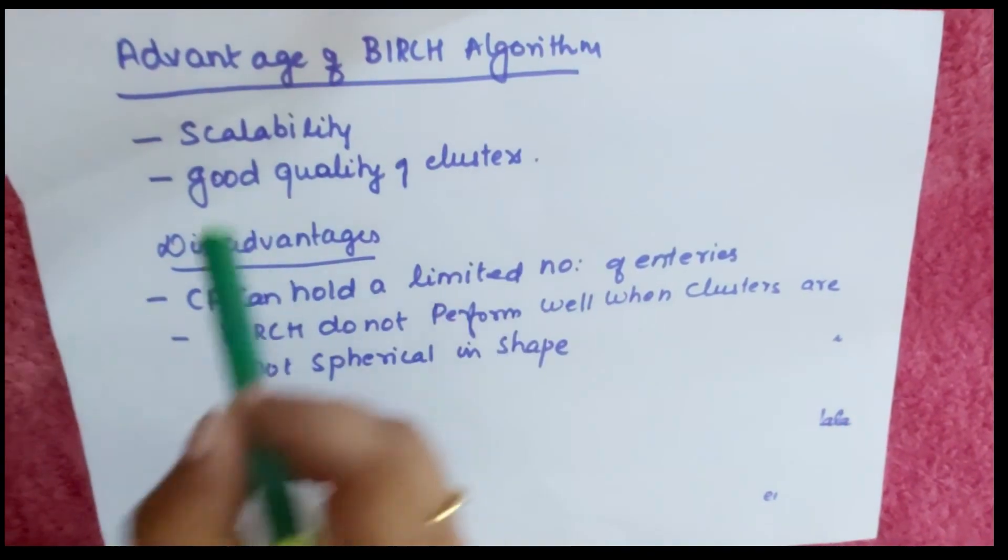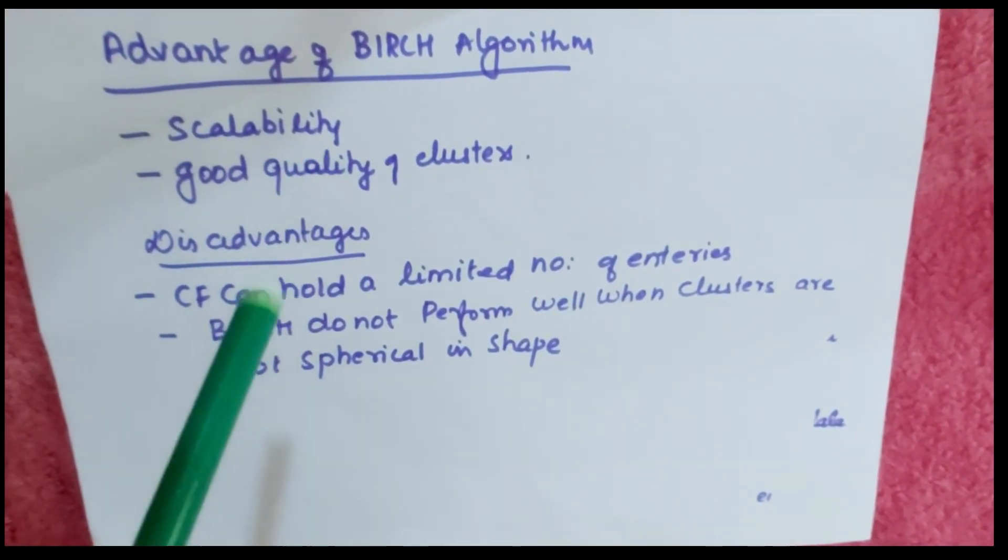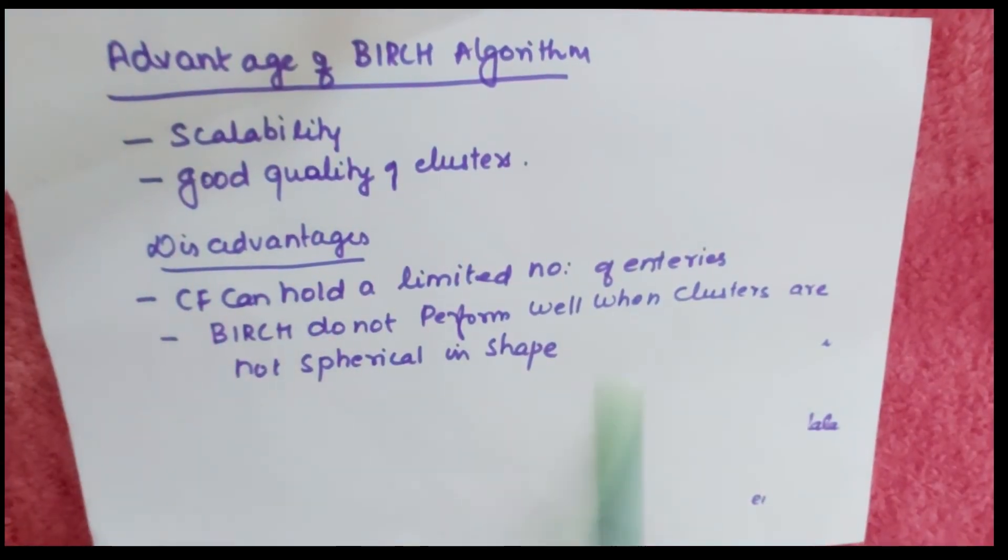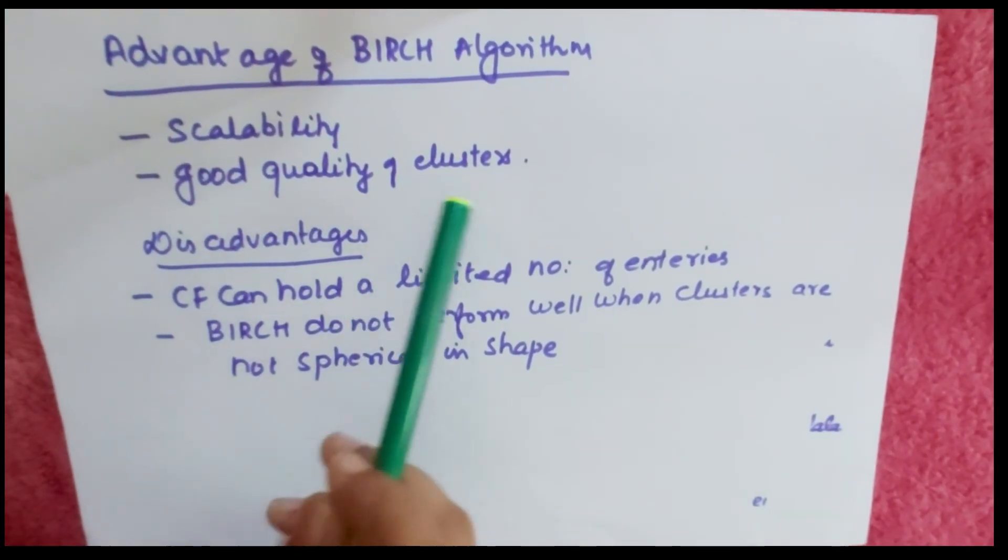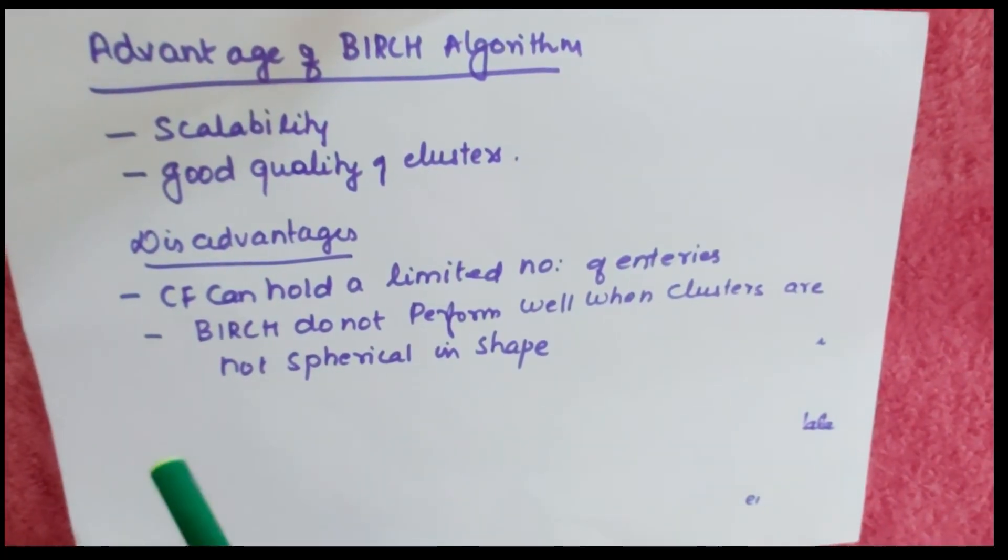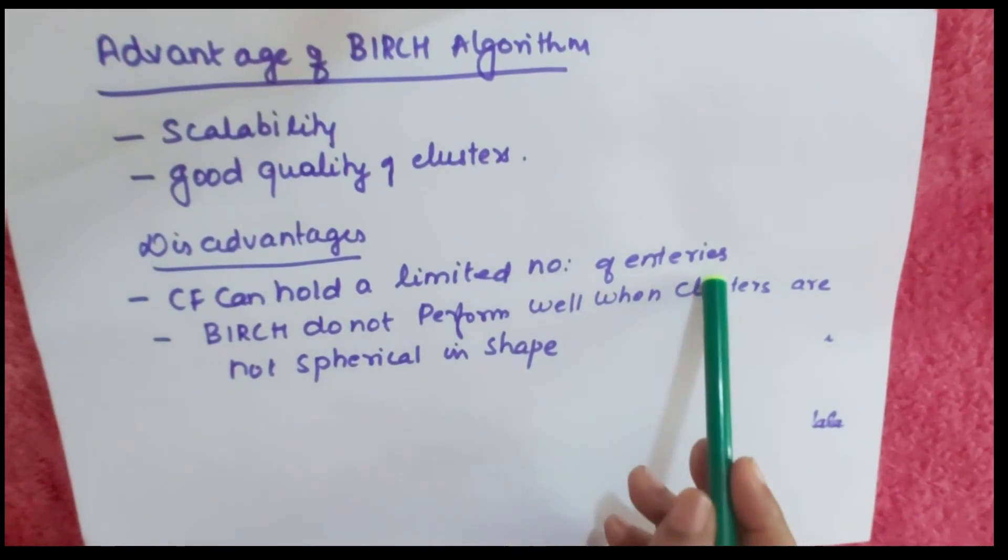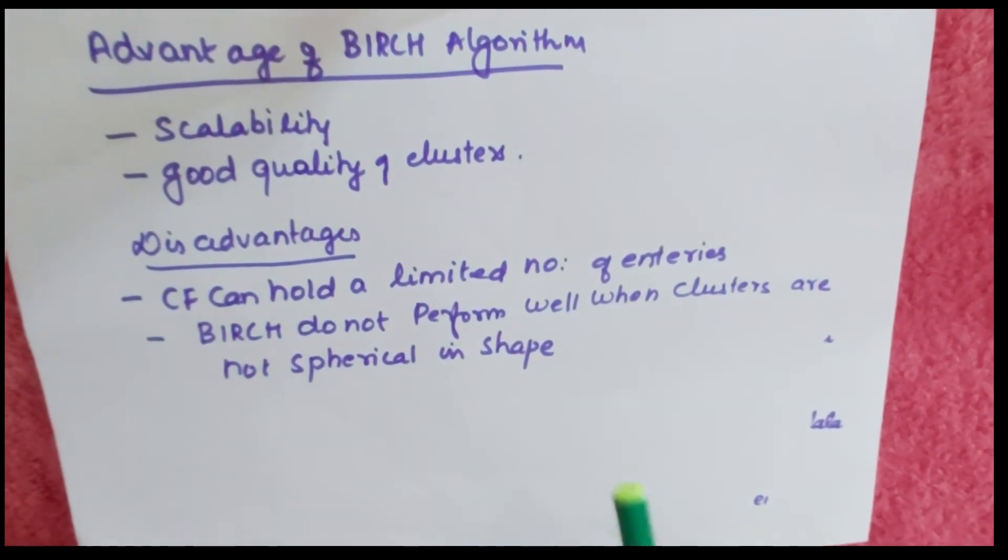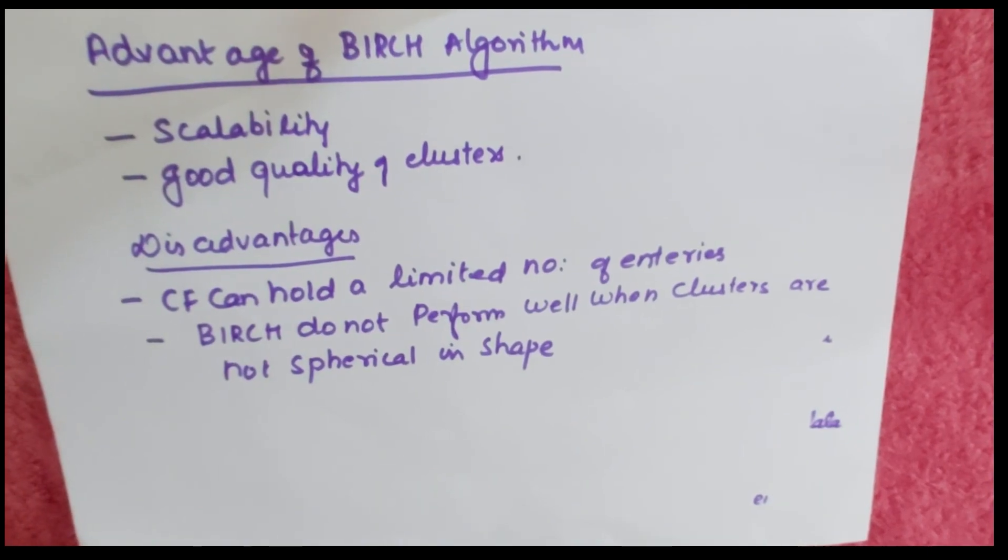Next are advantages and disadvantages. Advantages include scalability - it's more scalable than other clustering algorithms - and good quality of clusters. However, it has limitations: CF can hold a limited number of entries, and BIRCH does not perform well when clusters are not spherical in shape.